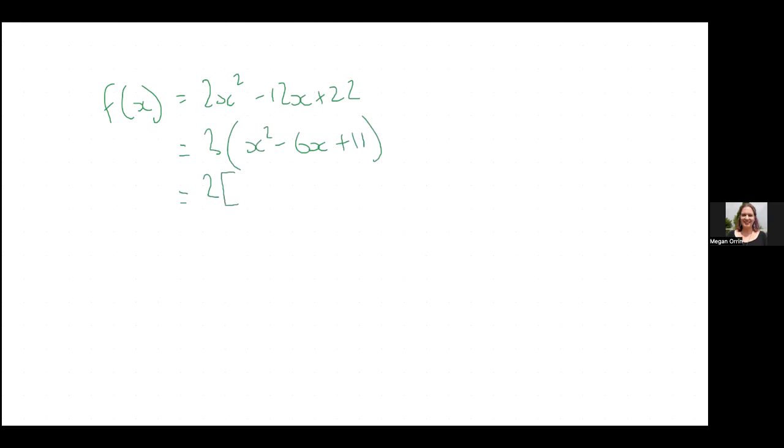So what does this become? And then what happens here? Minus nine. Good. And this must all be in brackets. So then I have x minus three squared plus two, which means I have 2(x - 3)² + 4.